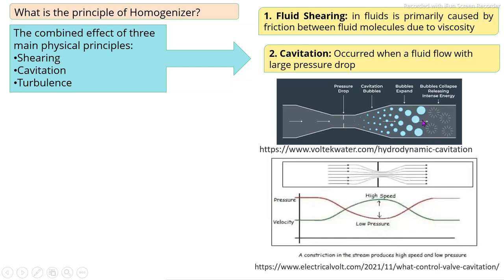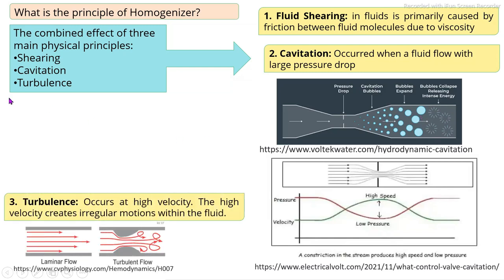As a result, liquid food product constituents undergo size reduction. The third force is the turbulence effect — when the fluid flows through the pipe with high velocity or by reducing the cross-sectional area, turbulence is formed. The velocity increases and the turbulent effect is also responsible for size reduction of the liquid food product. These are the three major forces responsible for size reduction.